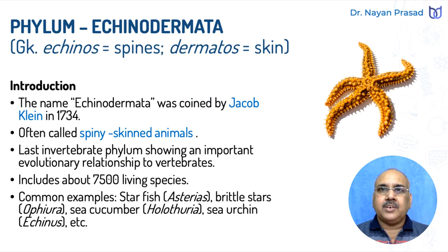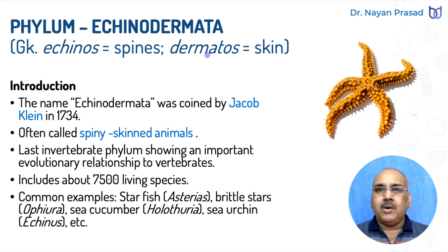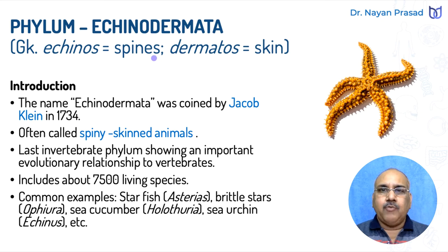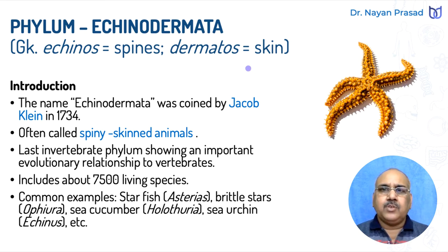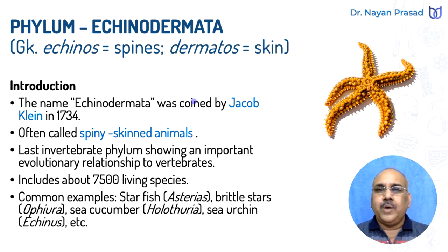Echinodermata is the last invertebrate phylum. The term Echinodermata has been taken from the Greek language, in which 'Echinos' means spines and 'derma' or 'dermatos' means skin. In fact, in the members of this group there are spines in their skin. A very common example is the starfish, where spines are clearly visible on their body. These are commonly called spiny-skinned animals. The name Echinodermata was coined by Jacob Klein in 1734 AD.